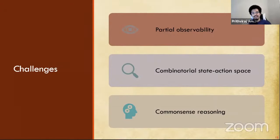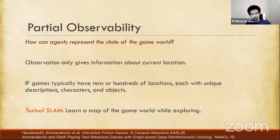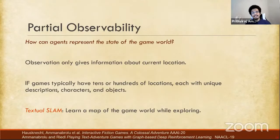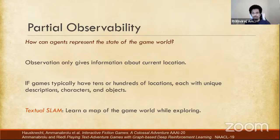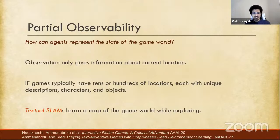What are the challenges involved in getting agents to operate in these worlds? There are three core challenges. The first is partial observability — how can the agent represent the state of the game world? Agents only interact with the world through textual natural language, so they only see very small bits of the world through potentially incomplete descriptions. These games have tens to hundreds of locations with unique characters, objects, and descriptions. How is the agent supposed to keep track of all of this? It's like a textual SLAM problem — you're trying to learn a map of the world while exploring it.